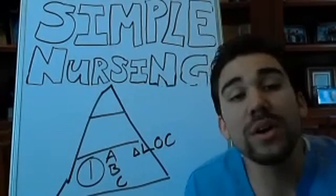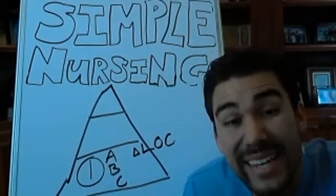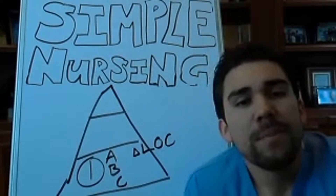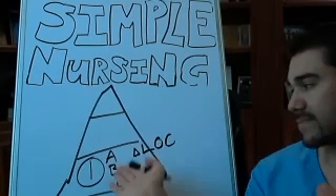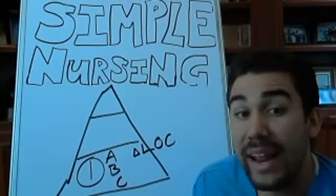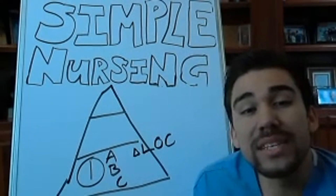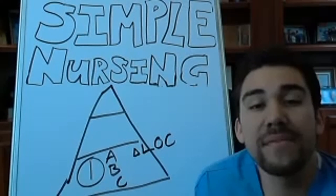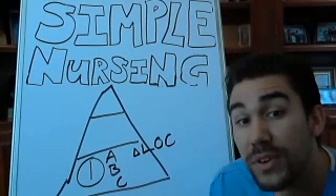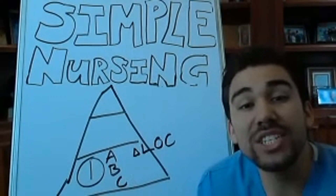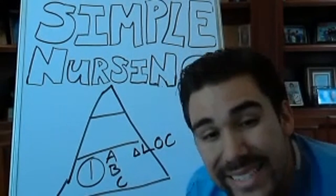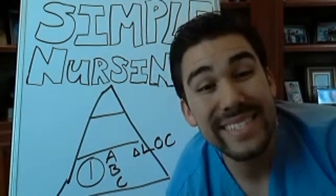Obviously, anyone who does have an airway, breathing, or circulation issue comes first in terms of priority. But what if you have three patients that don't have those type of issues? In terms of Maslow's hierarchy of needs, your airway, breathing, circulation comes first. Next is your change in level of consciousness. If your patient becomes altered, this is directly correlated to safety.